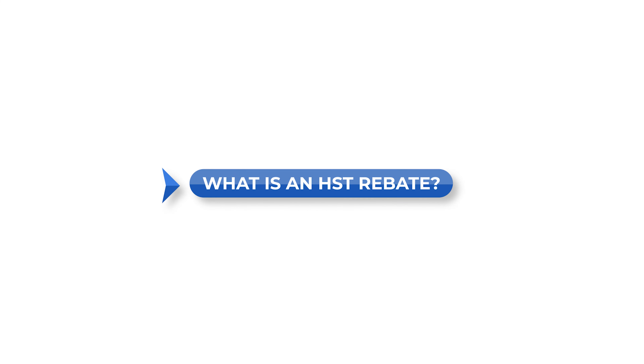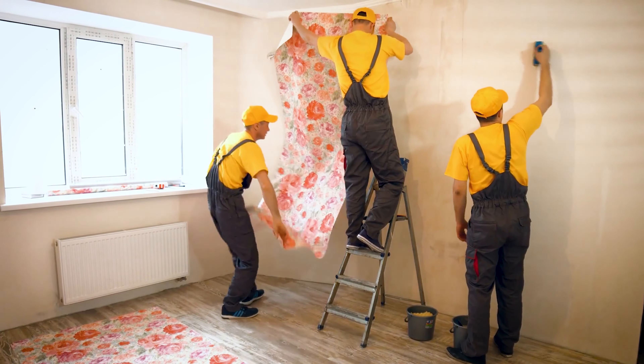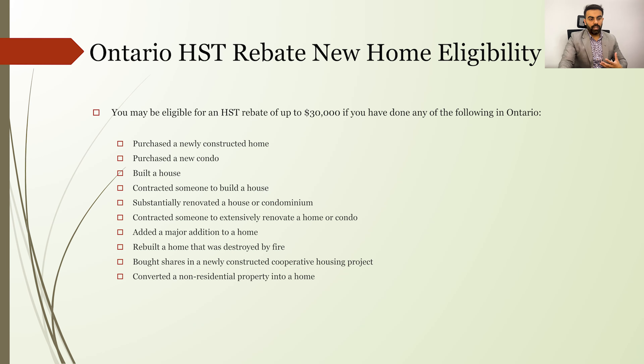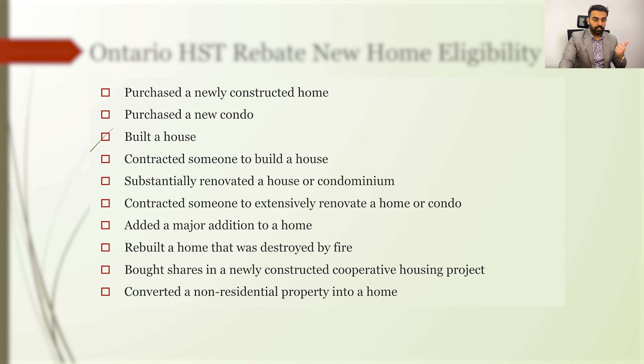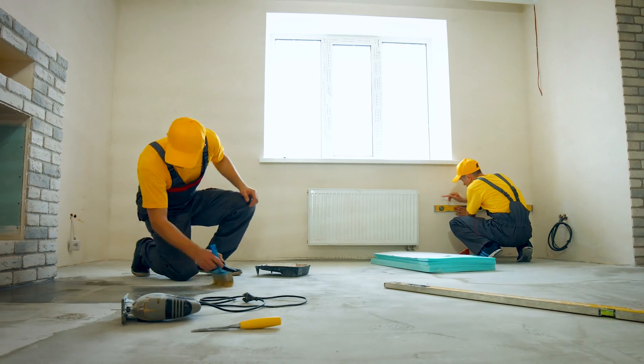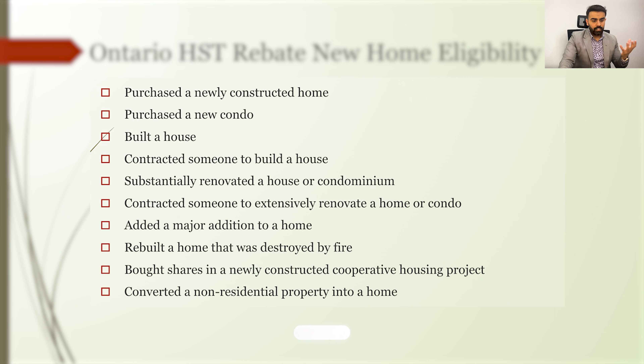The Ontario HST rebate is meant for new homes — any home that is built by a builder. Even if you've done a substantial renovation where you've spent an excessively high amount of HST, you can technically get a rebate for the HST that you have paid. As per the new HST eligibility, you must have purchased either a constructed new home, a new condominium, built or contracted someone to build a house, done a substantial renovation, added a major addition to a home, rebuilt a home destroyed by fire, bought shares in a cooperative housing project, or converted a non-residential property into a home. Under all of these criteria, you can apply for an HST rebate and get the money back.